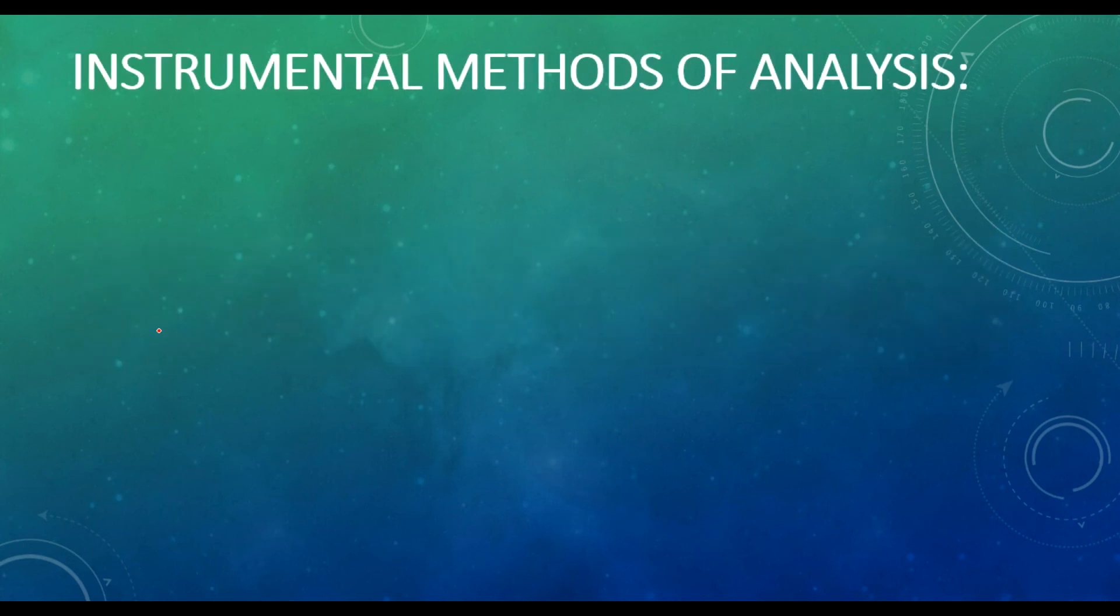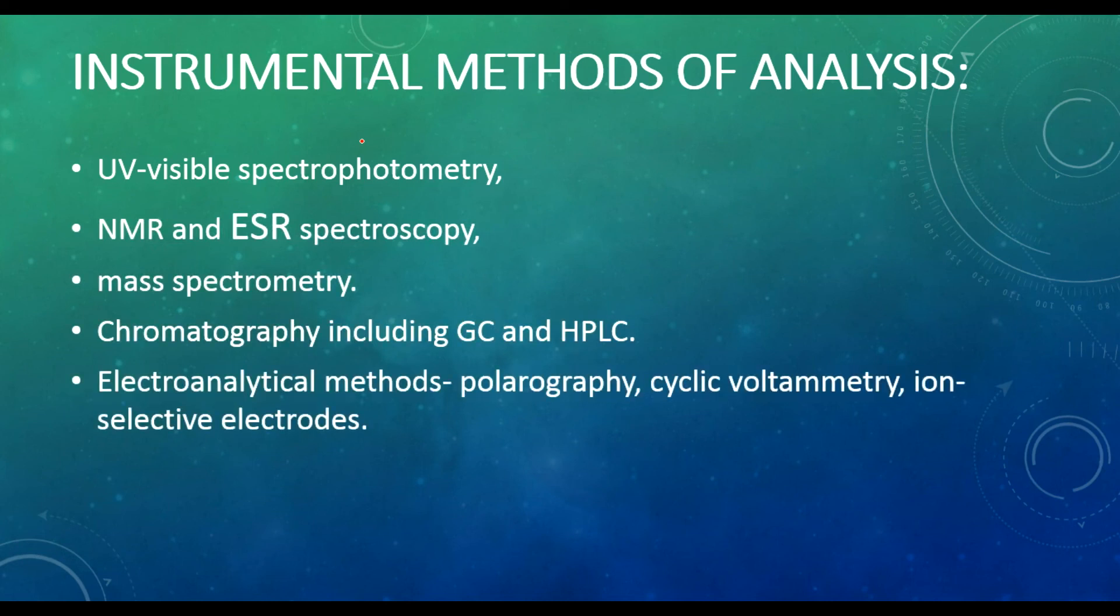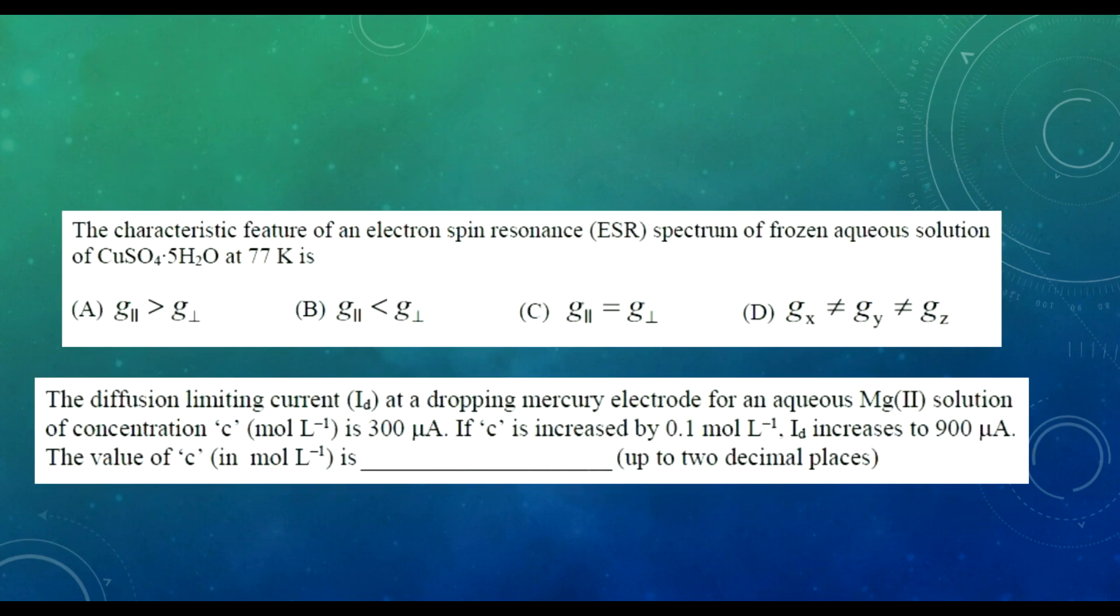The last syllabus is instrumental methods of analysis in inorganic chemistry: UV spectroscopy, NMR, ESR, mass spectrometry. In polarography, diffusion current is asked. In thermoanalytical methods, this year CSIR asked questions regarding DTA and DSC, so you have to know about this. This year's questions were based on ESR spectroscopy and diffusion limiting current from polarography.